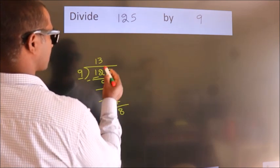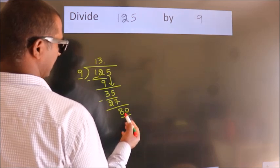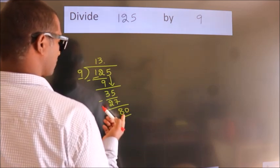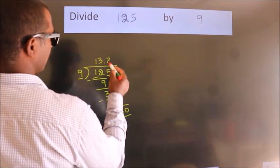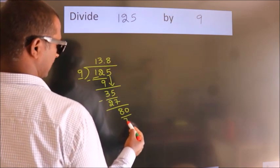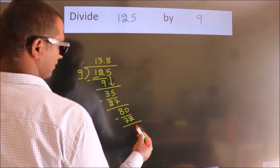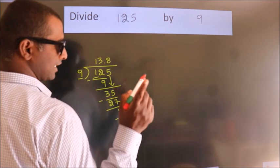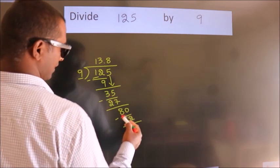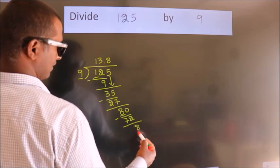So what we do is we put a dot and take 0. So 80. A number close to 80 in the 9 table is 9 eights, 72. Now we subtract. We get 8. Now you observe here, we had 8 and we got 8 again.